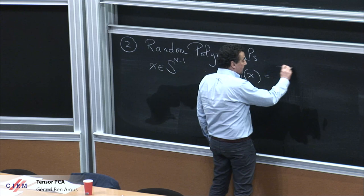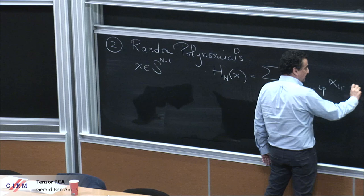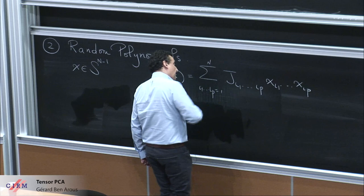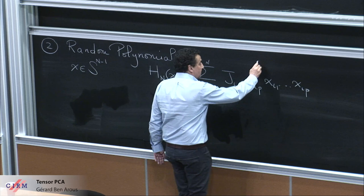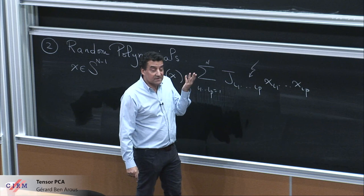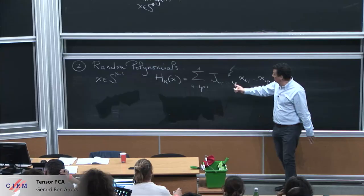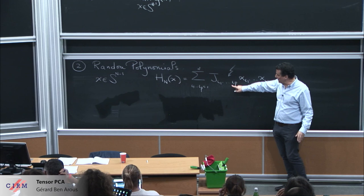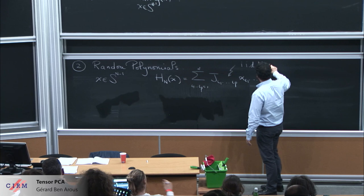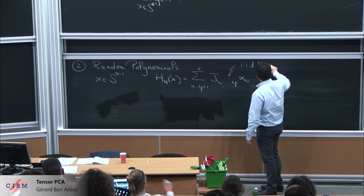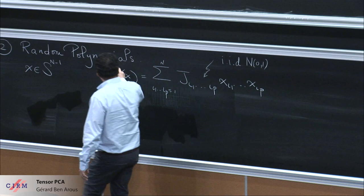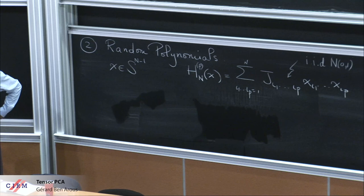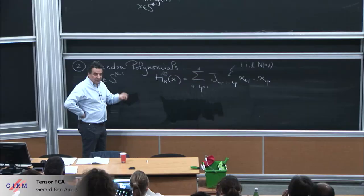What is a random polynomial? It's just something of that form — you have coefficients that you choose to be random. The simplest idea: pick the coefficients randomly, IID, Gaussian to simplify. I will call this model H_P — the simplest thing you can imagine as a random polynomial of degree P. And of course, here you see the tensor — it's there.